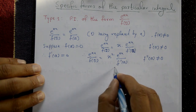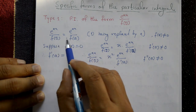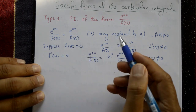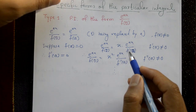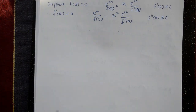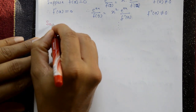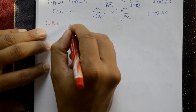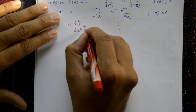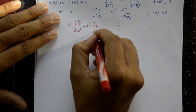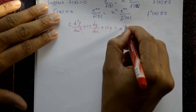This is Type 1 — simply replace D equal to a to get the particular integral. Now let us see examples. Example: 6 d²y/dx² + 17 dy/dx + 12y = e^(-x).